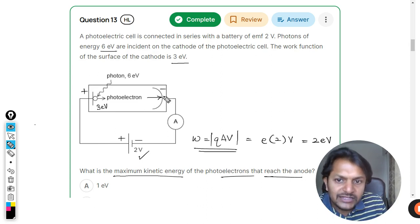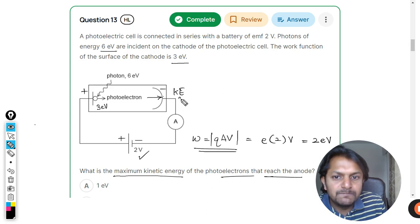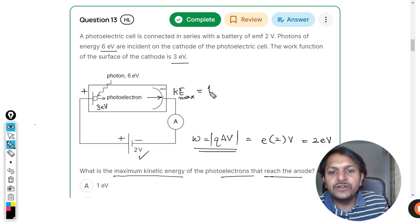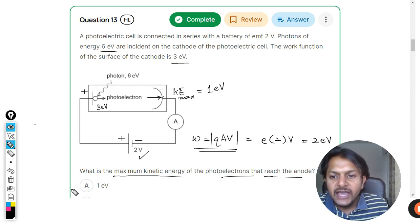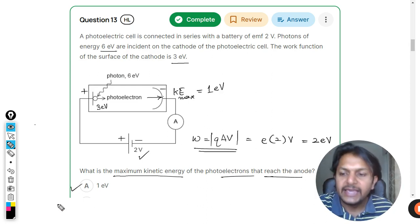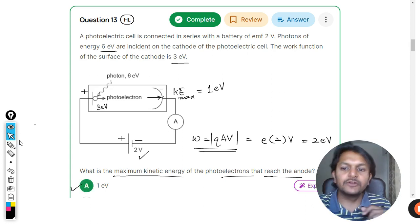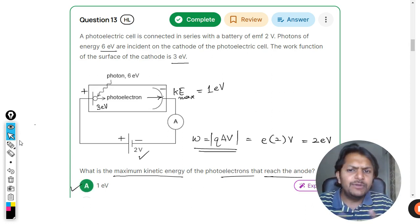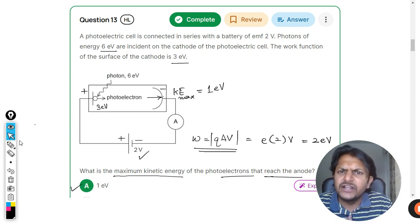When the electron is going to strike the plate, the maximum possible value of kinetic energy for the electrons at the anode will be equal to 1 eV. Hence the answer will be A. Let's see if the answer is A or not. Absolutely correct, the answer is A. This is how we do this. I believe this is pretty clear now.